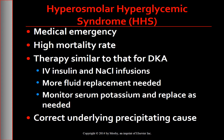HHS constitutes a medical emergency and has a high mortality rate. The administration of insulin and either normal saline or half normal saline is crucial. HHS usually necessitates a greater volume of fluid replacement, which should be accomplished slowly and carefully. Patients with HHS are commonly older and may have cardiac or renal compromise, necessitating hemodynamic monitoring to avoid fluid overload. When blood glucose levels fall to approximately 250 mg/dL, IV fluids containing glucose are administered to prevent hypoglycemia.